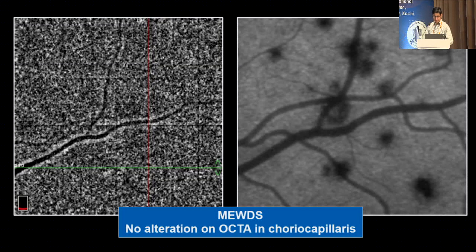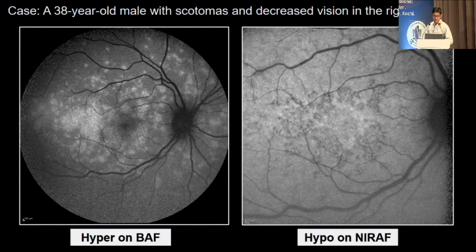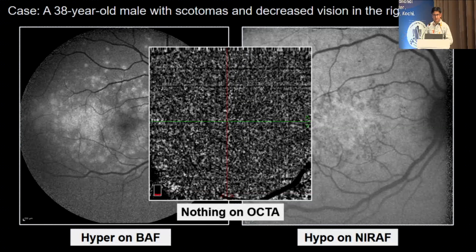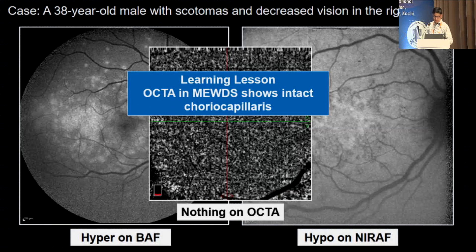Finally, in a patient with scotomas and a white dot syndrome, two types of autofluorescence are done — on Spectralis: blue peak autofluorescence shows hyper while near infrared shows hypo. This contrasting finding tells you this is MUTES. On OCTA, nothing is found — OCTA in MUTES shows intact choriocapillaries. This is a very important distinguishing finding. With this I'll stop — happy to take questions.